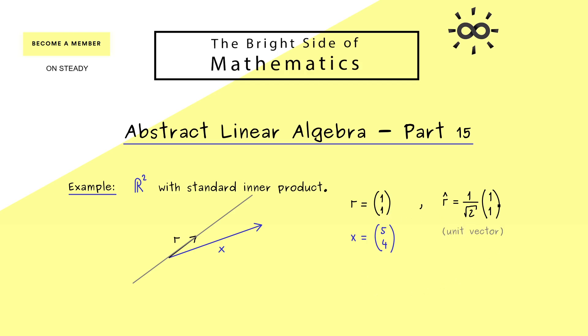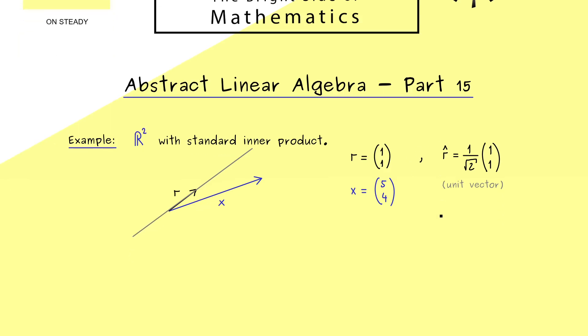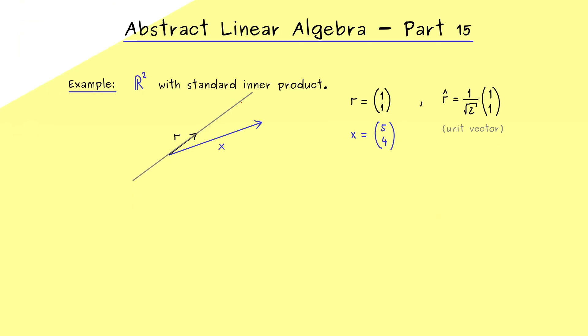And in conclusion, you could call r-hat a unit vector. Now I'm telling you that because the formula for calculating the orthogonal projection looks much simpler with the unit vectors involved.